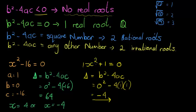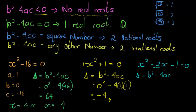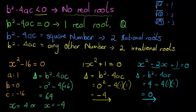Next up, let's look at x squared minus 2x plus 1 equals 0. Our discriminant equals b squared minus 4ac. This time, b is equal to negative 2. Negative 2 squared is 4, minus 4 times a (which is 1) times c (which is also 1). We get 4 minus 4, which is 0. When it is equal to 0, we have one real root. And you'll remember that this one's answer was x is equal to 1.